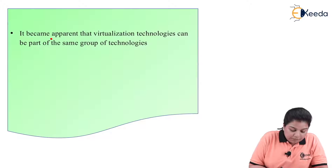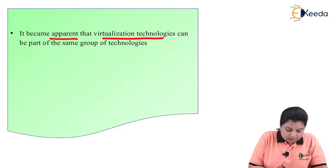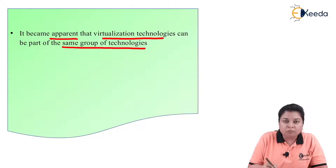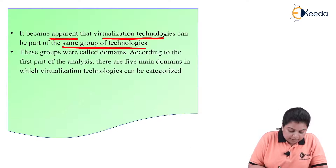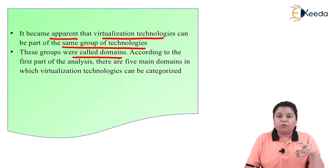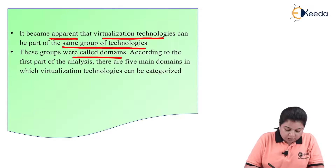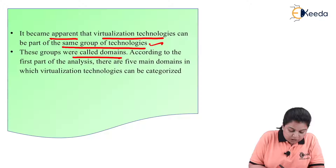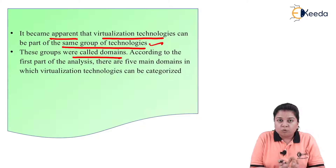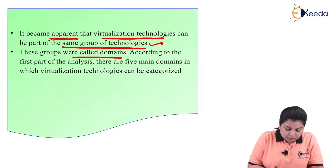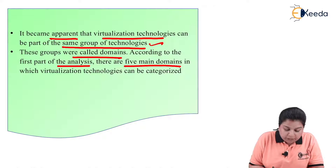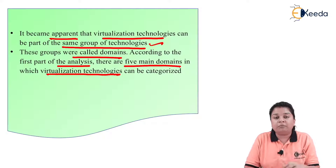It became apparent that virtualization technologies can be part of the same group of technologies. These groups were called domains. There are different domains which contain the same group of things. According to the first part of the analysis, there are five main domains in which virtualization technologies can be categorized.